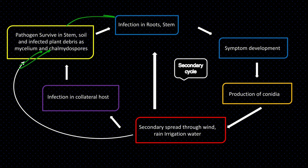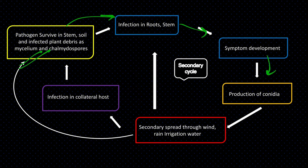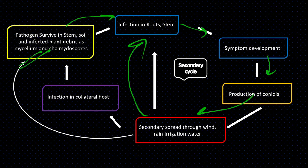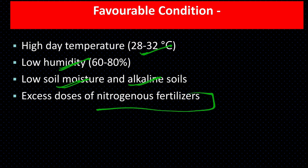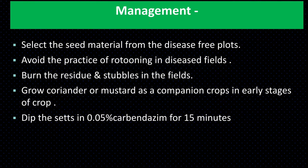The pathogen survives in the soil as mycelium or chlamydospores, then infects roots and stems. It extracts nutrition from plants, causing visible symptoms. It then produces macroconidia and microconidia, which spread via wind, rain, or irrigation water to other plants — this constitutes the secondary infection cycle. The pathogen also survives in collateral hosts and weed hosts. Favorable conditions: 28 to 32°C temperature, low humidity, low soil moisture, alkaline soil, and excess nitrogen fertilizer.